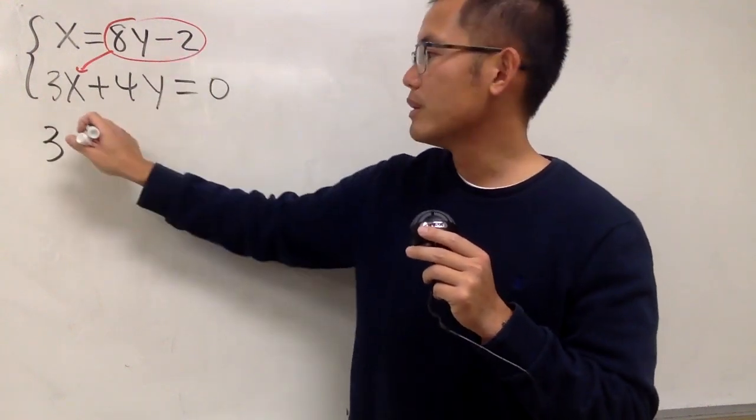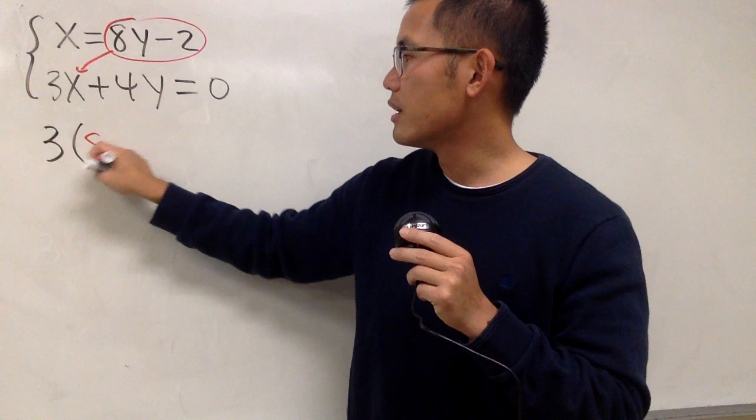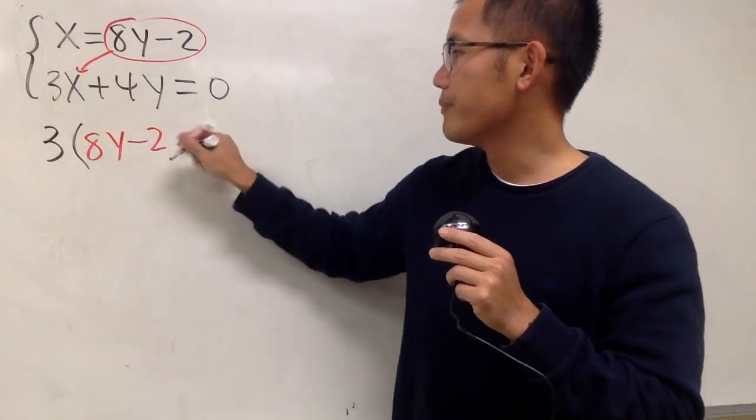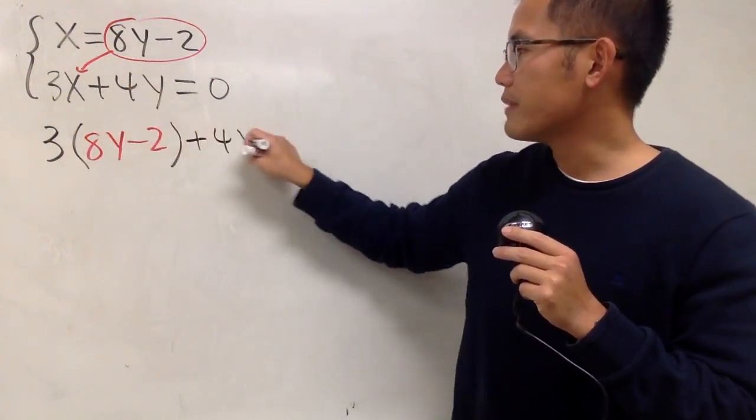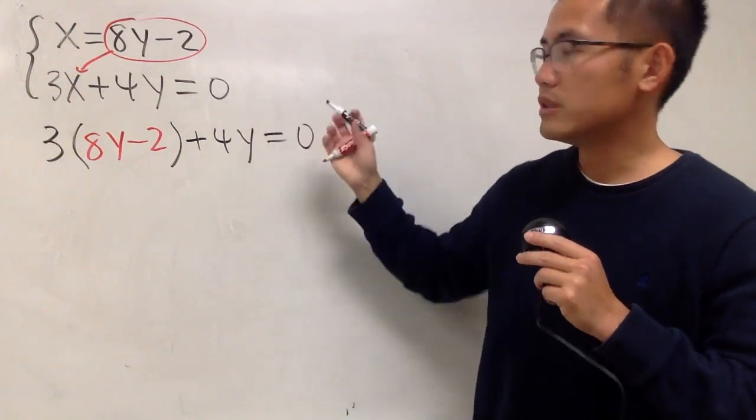Open the parentheses, and you enter 8y minus 2. And we continue. We add a 4y after that, and that's equal to 0.